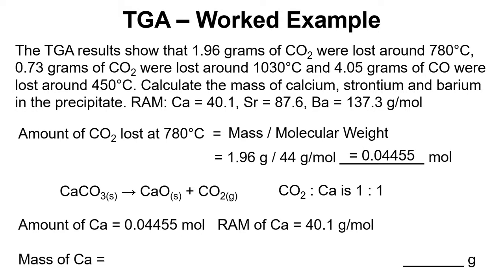So we can work out the mass by multiplying amount by relative atomic mass for the calcium and that shows that we have 1.79 grams of calcium in that original precipitate.